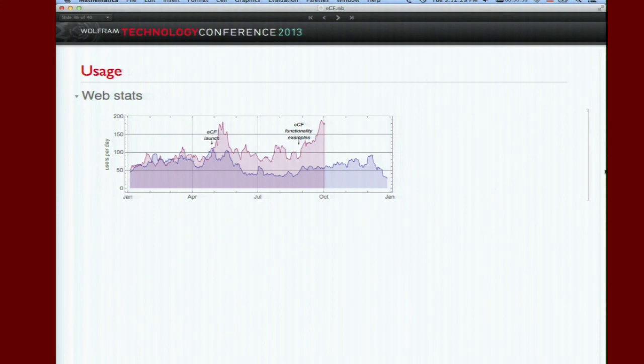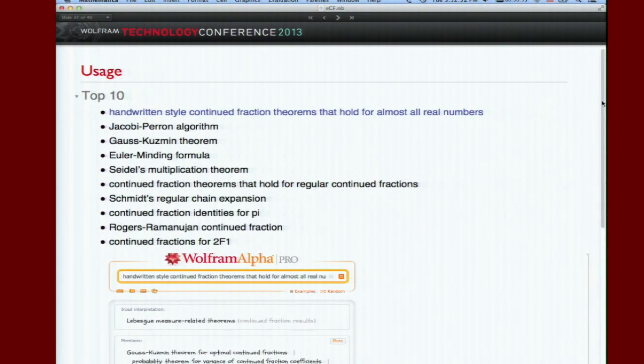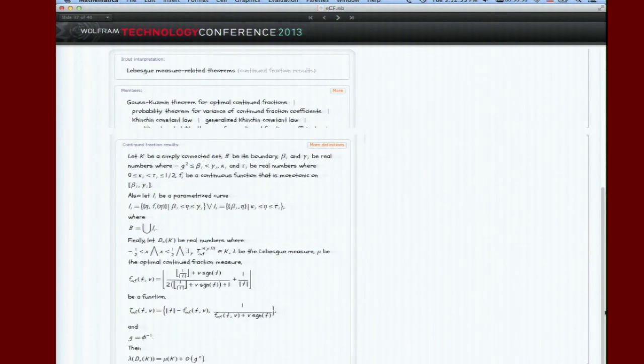And there has been some interest in it. There's not huge numbers on these, but there are two plots. The top one is the year that we've been working in releasing eCF, which is significantly higher. That's total number of continued fraction queries on Wolfram Alpha. The bottom is the year before in the baseline. So there's some interest in it. I have a list of top ten queries, which I don't have time to go in in detail, but the most popular is the handwritten style continued fraction theorems that hold for Lebesgue measure zero. I don't know if any of you have seen this, but we have this cool kind of handwritten. I think students do it just as a joke. But anyway, if you type this into Wolfram Alpha, you'll get the result but in kind of a cute handwritten form.